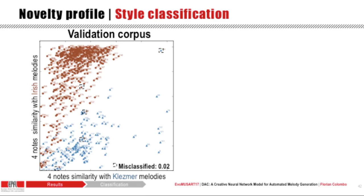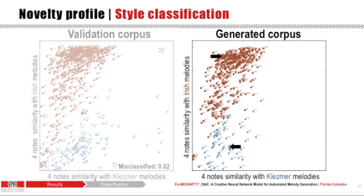We found that the novelty profile measure can be used for style classification. Each point represents a melody from the validation corpus; its vertical coordinate is the four-note similarity with Irish-only melodies in the training corpus, and its horizontal coordinate is the four-note similarity with Klezmer-only melodies. We trained a classifier of music style on these data and obtained high accuracy — only five melodies were misclassified. Red circles are melodies classified as Irish, blue triangles as Klezmer. Applying this trained classifier to melodies generated by our model, not only are generated melodies correctly classified, but the DAC produces melodies that are consistent in style, as opposed to a mix of both styles.